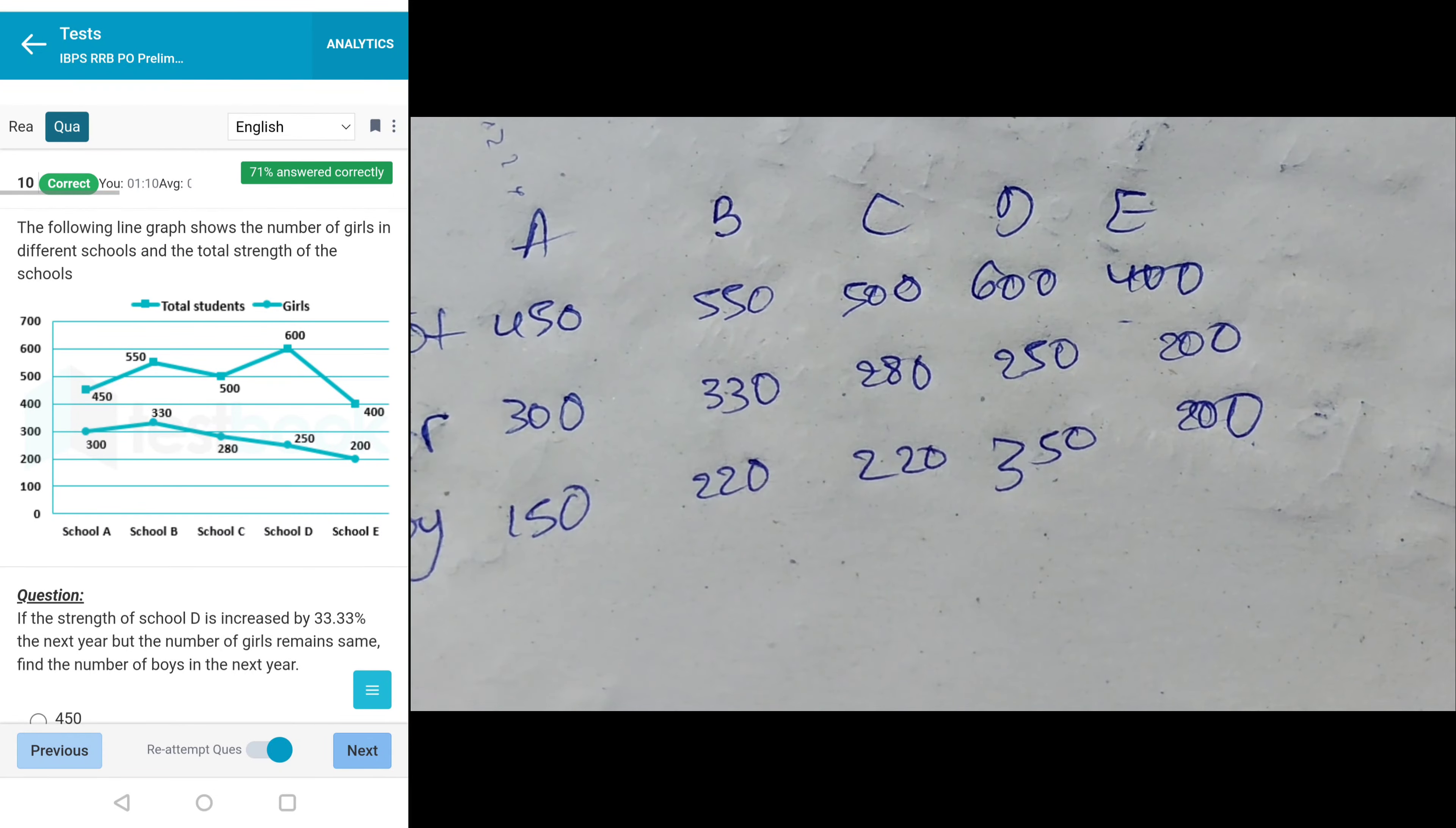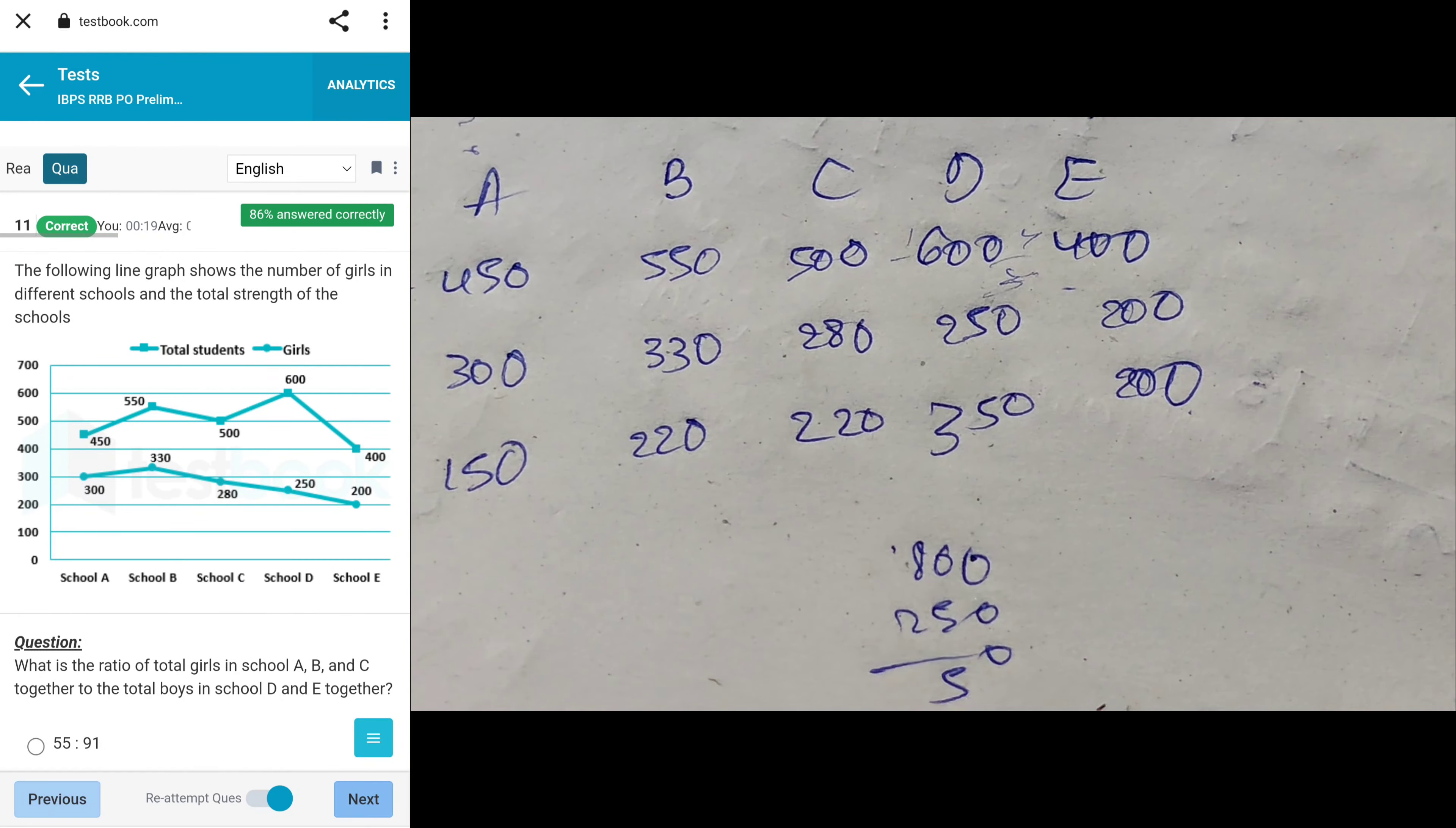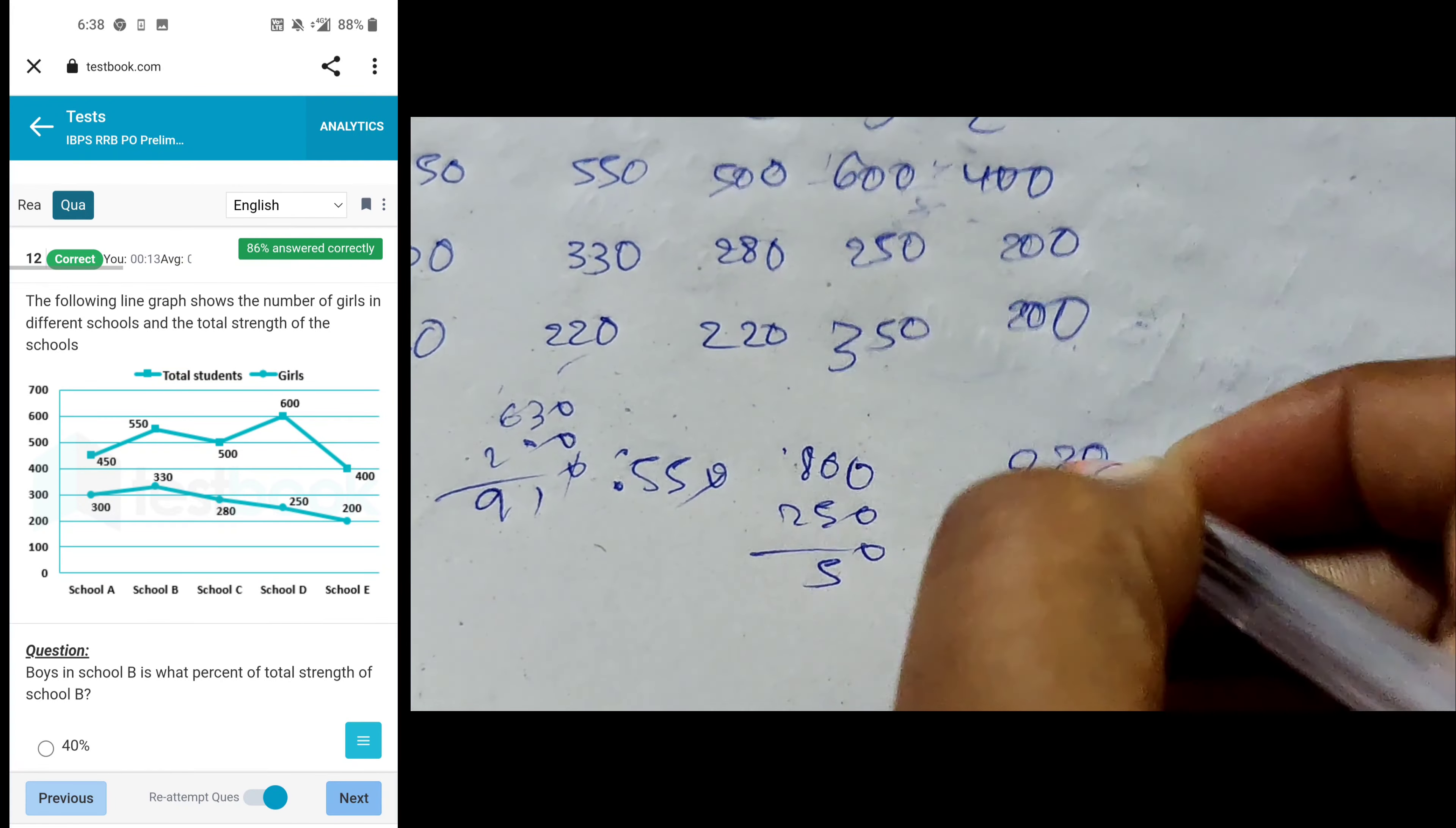Now the questions. If the strength of school D increases by 4/3, it means 400 becomes 800. Next year the number of girls remains the same at 250, so what is the number of boys? 550. Next, the ratio of total girls in A, B, C - A is 630, C is 280, that's 910, and total boys in D is 550. So 91 to 55, option B.